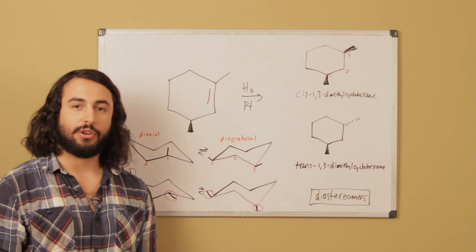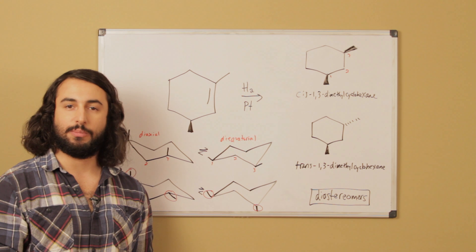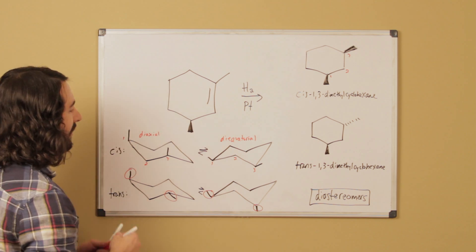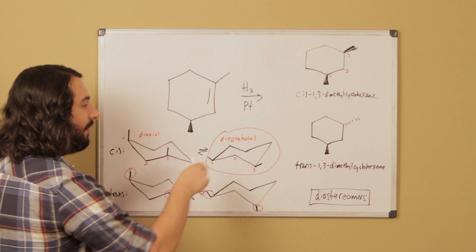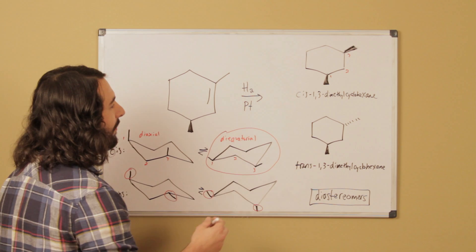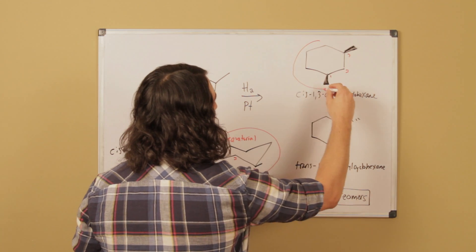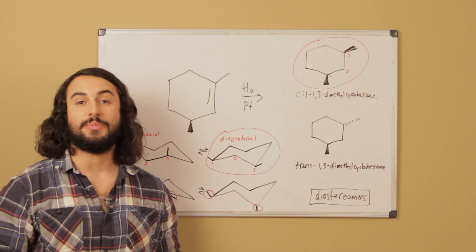We know that the axial position is going to be less thermodynamically favorable because of the diaxial interactions that are happening. The equatorial position is the more favorable one of the two. That means this is the most favorable conformation because both methyl groups are in the equatorial position, and that means the cis compound is the more thermodynamically favorable of the two in terms of conformation.